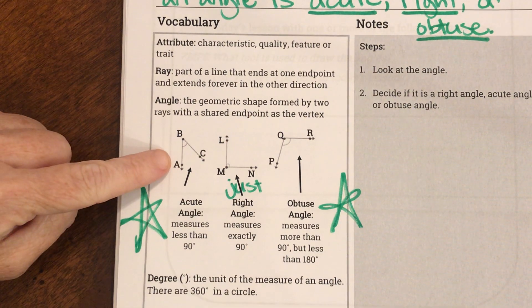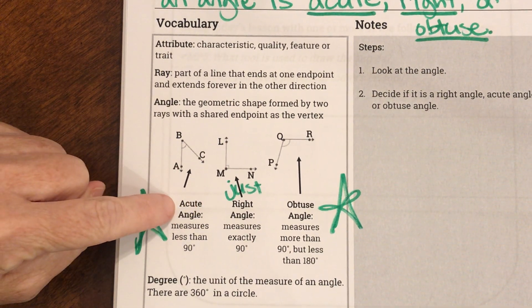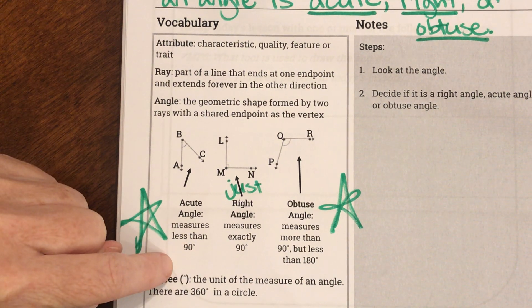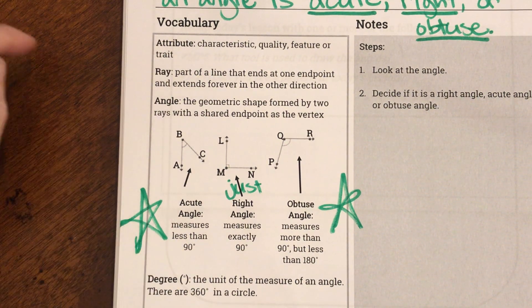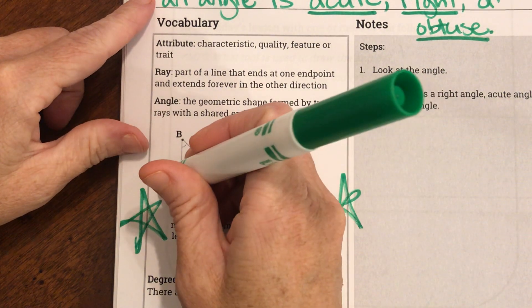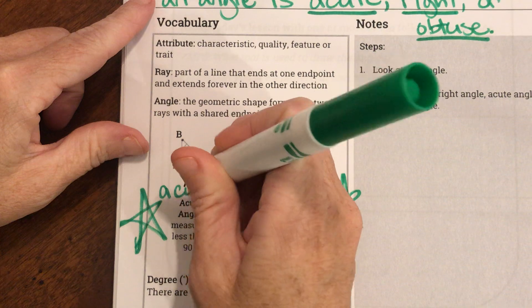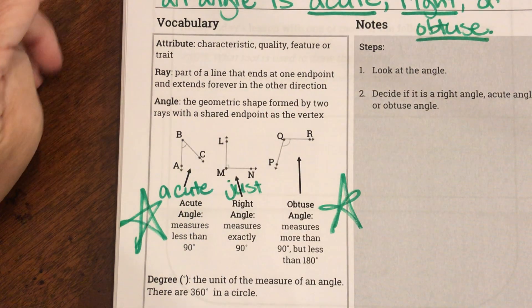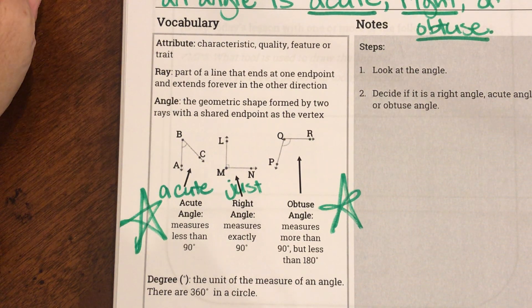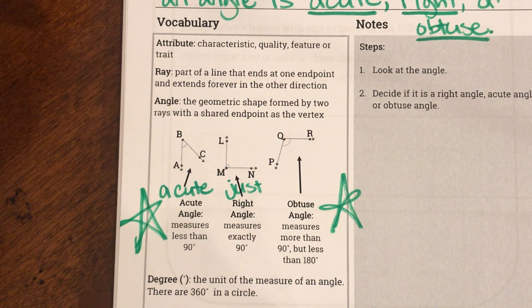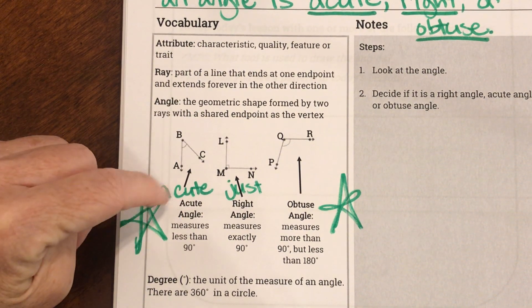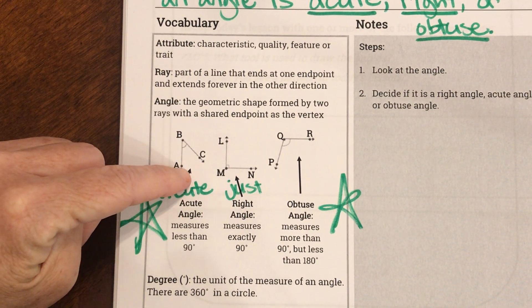Now the one that we're going to talk about next is called an acute. Acute angle measures less than 90 degrees. So, it's smaller than 90. It's little. So, I always think of an acute angle as a cute. So, if we think about little things, we always think of them as being cute. Babies are cute. Puppies are cute. Kittens are cute. Little things are cute. So, little angles are acute angles.